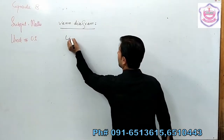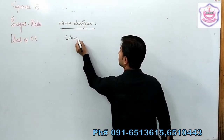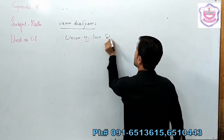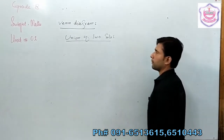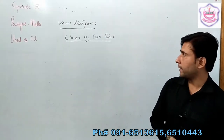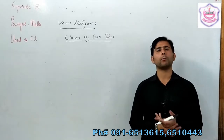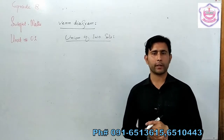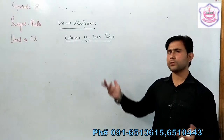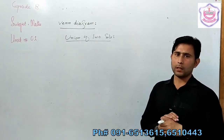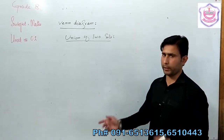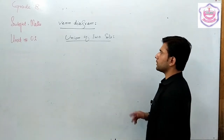The first operation we will discuss is the union of two sets. When we take combined elements of two or more than two sets in a single set, it is called the union of the given sets.